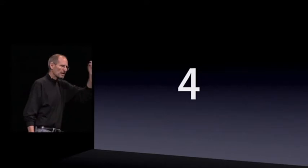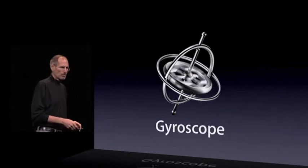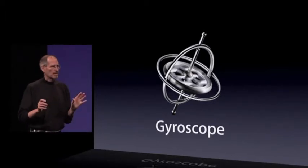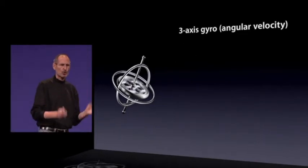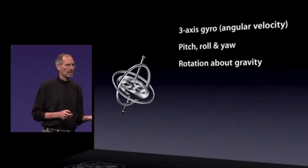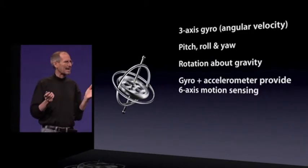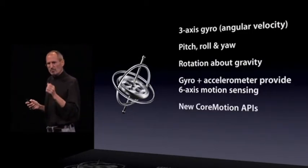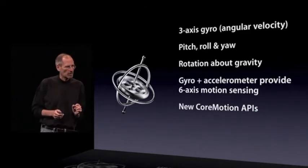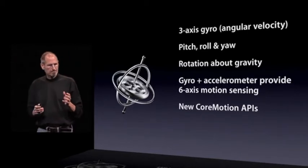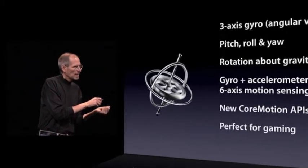Number four — we've got another really cool piece of hardware. Remember when we added the accelerometer and how that opened up a whole new vista of gaming? Well, we're taking it even further with the iPhone 4 because we're adding a gyroscope — a three-axis gyro, which is fantastic. Pitch, roll, and yaw, also rotation around gravity. We've tied the gyro, the accelerometer, and the compass together to provide six-axis motion sensing. We've got new Core Motion APIs that give you extremely precise position information, and it's perfect for gaming because it's built into every iPhone 4.